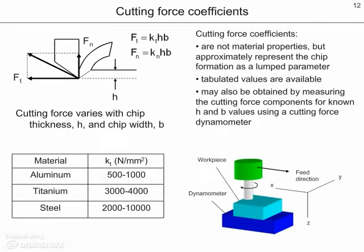We also require the force model in order to develop a stability lobe diagram. This force model is described in terms of cutting force coefficients. Some important notes: cutting force coefficients are not material properties, but rather approximately represent the chip formation as a lumped parameter. Tabulated values are generally available. Cutting force coefficients may also be determined experimentally by measuring the cutting force for known cutting conditions using a cutting force dynamometer. Some representative values for common materials are shown in the table.